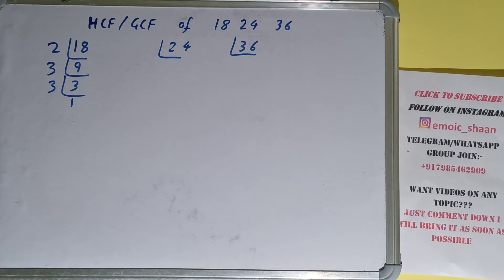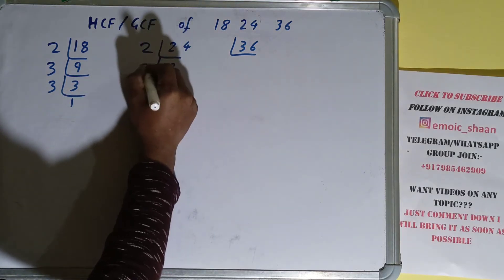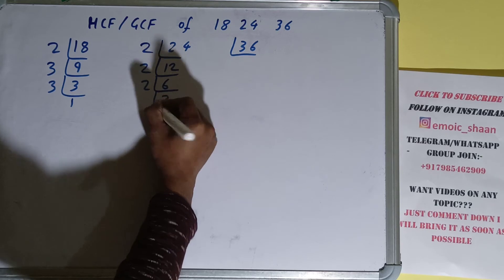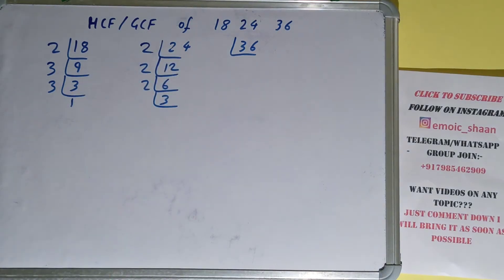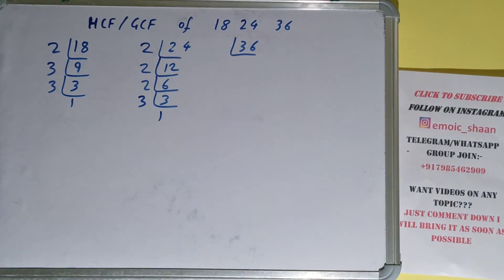Now we do the same with 24. Is 24 divisible by 2? Yes, giving us 12. Is 12 divisible by 2? Yes, giving us 6. Is 6 divisible by 2? Yes, giving us 3. Is 3 divisible by 2? No — 3 is a prime number, so it is only divisible by itself, giving us 1. We're done with 24.